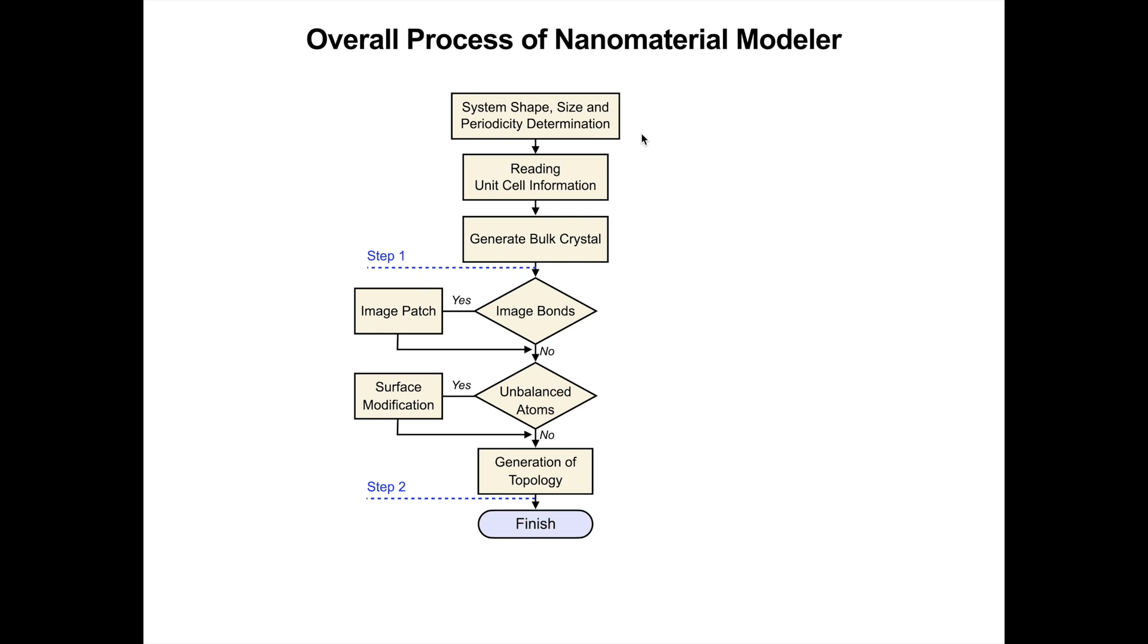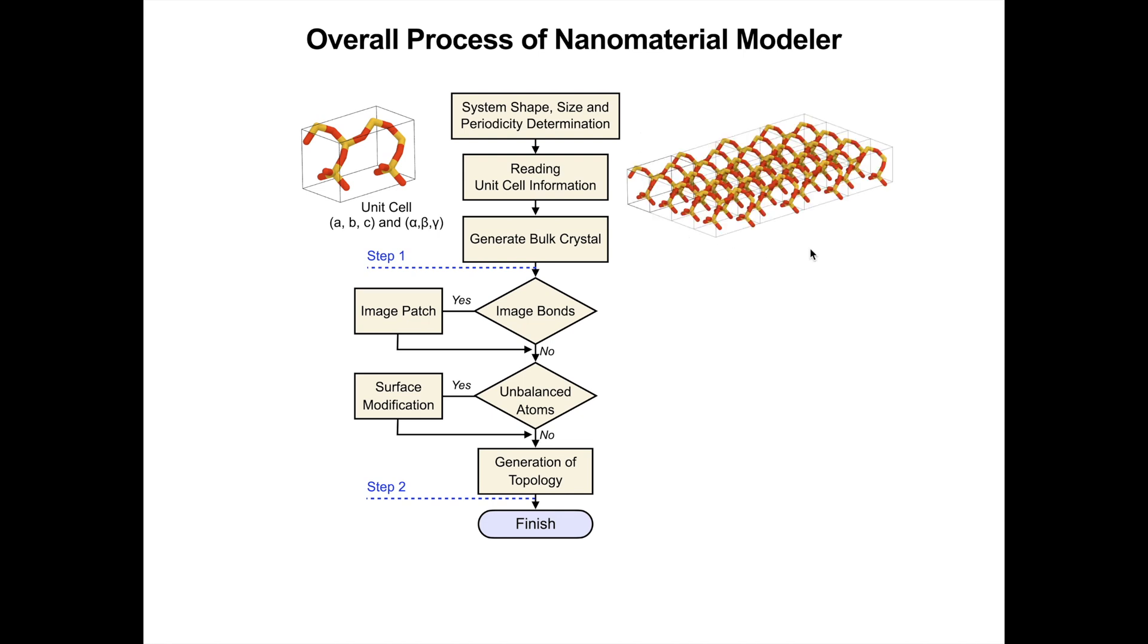The system type option controls whether to solvate the nanomaterial. The selected material is modeled using a unit cell structure. Each unit cell structure is duplicated and translated up to the specified system size.